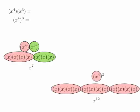And in the second example, we're bringing x to the 4th to the 3rd power, which means we're multiplying it by itself 3 times. So we have three of those long pink ovals, each containing four x's, and it's clear to see that we're multiplying 4 by 3 to get x to the 12th there.